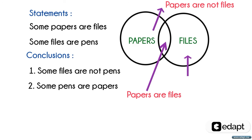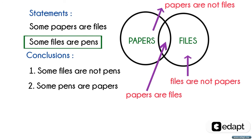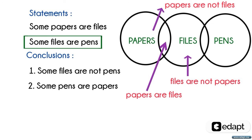And what about this region? It means that files are not papers. So this portion includes some papers are files. For the second statement, some files are pens means that some portion of pens are included in files, so it includes files are pens.